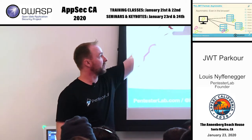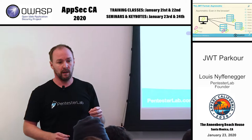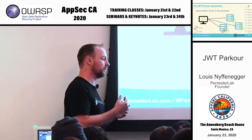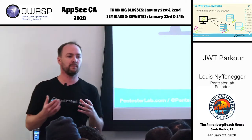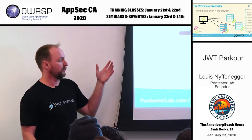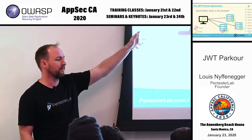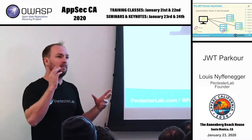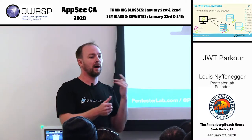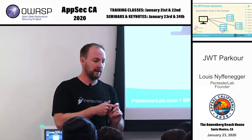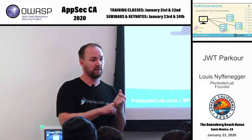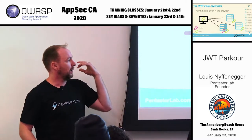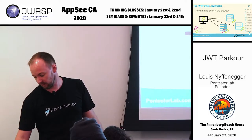With asymmetric, the good thing is you can even put the public key in the browser, so you can verify the token and be sure of its signed information. Why isn't everybody using asymmetric? Because it's harder to deploy, and performance-wise it takes a lot more computational power to verify an asymmetric signature than a symmetric one.